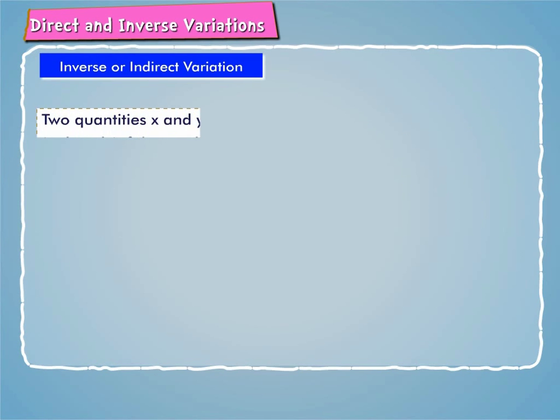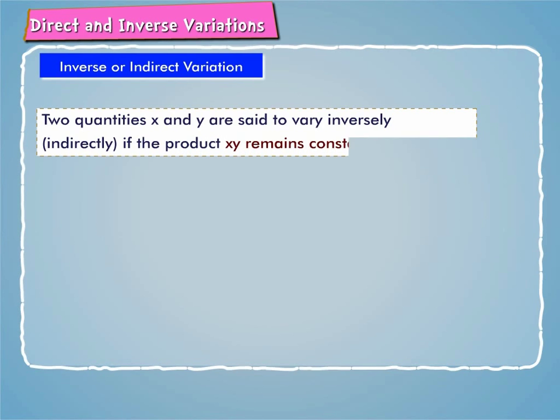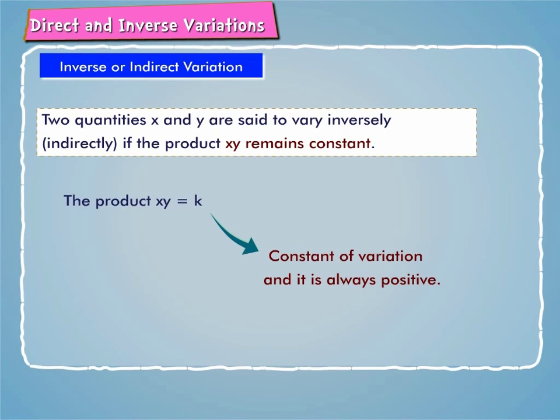Thus, two quantities x and y are said to vary inversely (indirectly) if the product x times y remains constant. The product x times y equals k is called constant of variation and it is always positive.